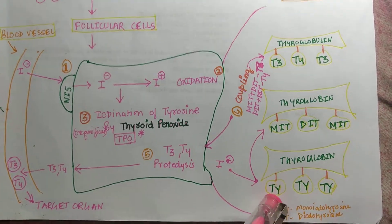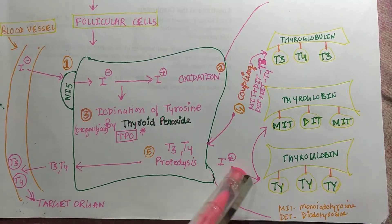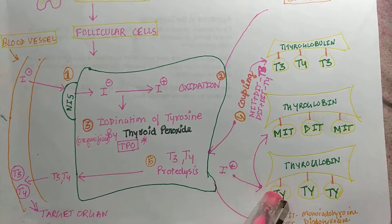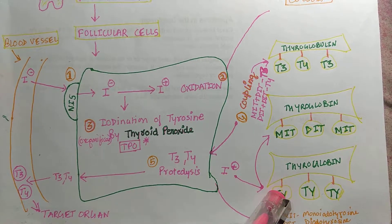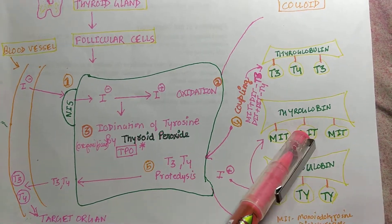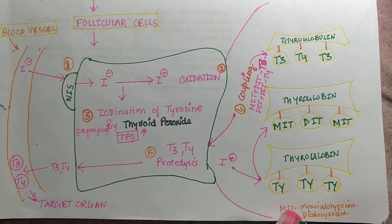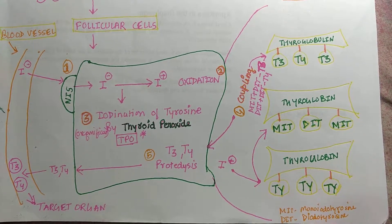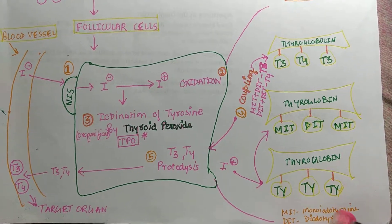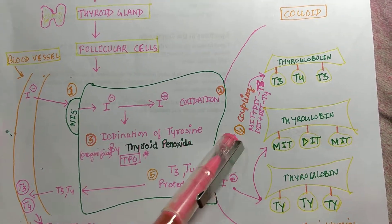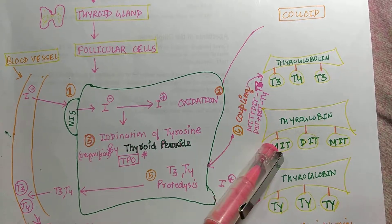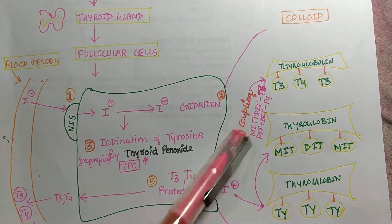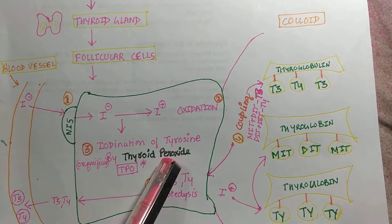The iodine attaches to the tyrosine. As you can see, the iodine goes to tyrosine and forms MIT and DIT. MIT is monoiodotyrosine and DIT is diiodotyrosine. The fourth step is coupling of MIT and DIT, which is also carried out by thyroid peroxidase.